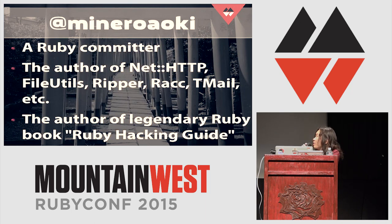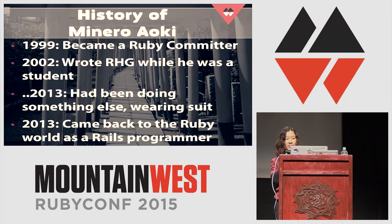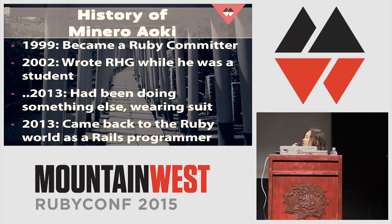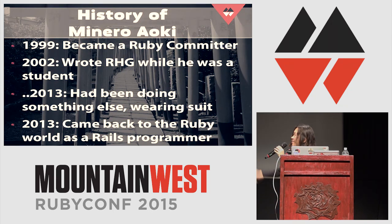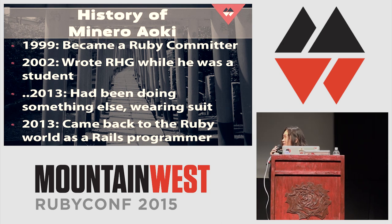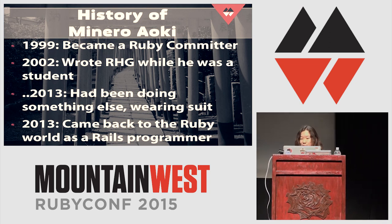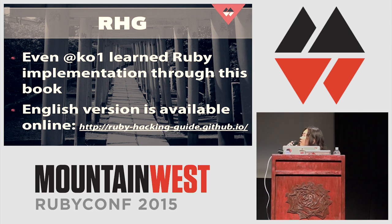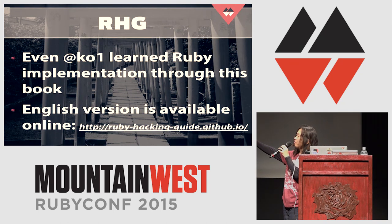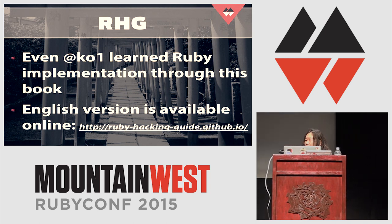This Rails newbie's name was Minero Aoki. He is a Ruby committer. He created net/http, fileutils, and tons of other core libraries. He's also the author of the legendary Ruby book titled Ruby Hacking Guide. He used to be a Rubyist, then quit, then came back to the Ruby world recently and started using Rails two or three years ago — and then he found that Haml is slow. Ruby Hacking Guide is available online in an English version if you're interested in Ruby's implementation.